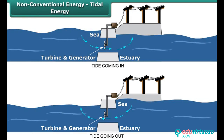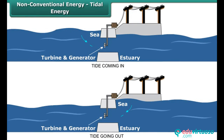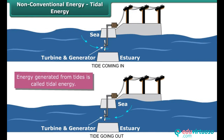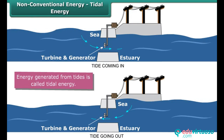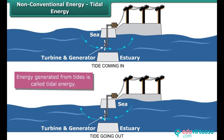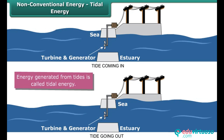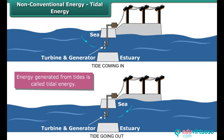Tidal energy is the energy generated from tides. During high tide, the energy of the tides turns the turbine blades in the dam to produce electricity.